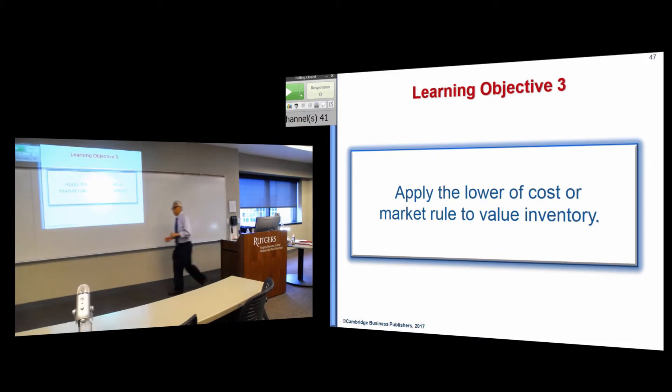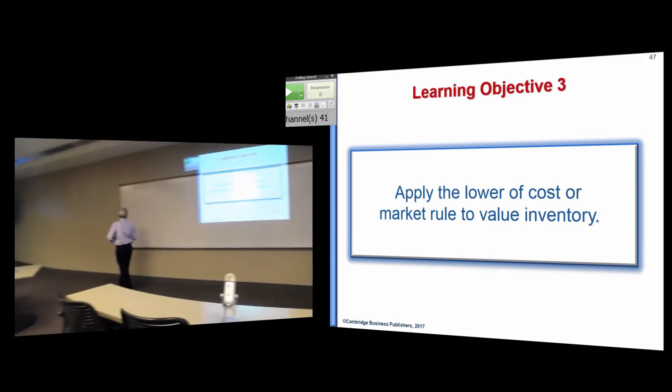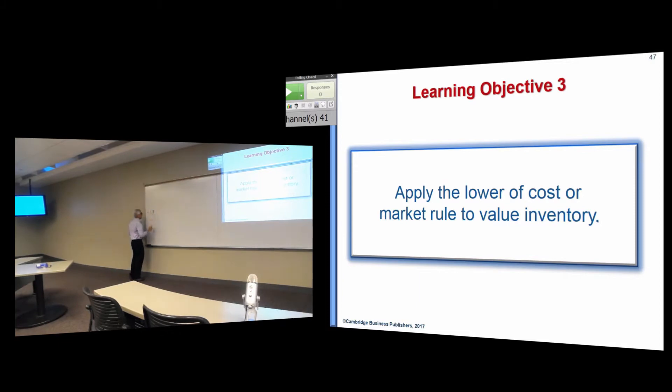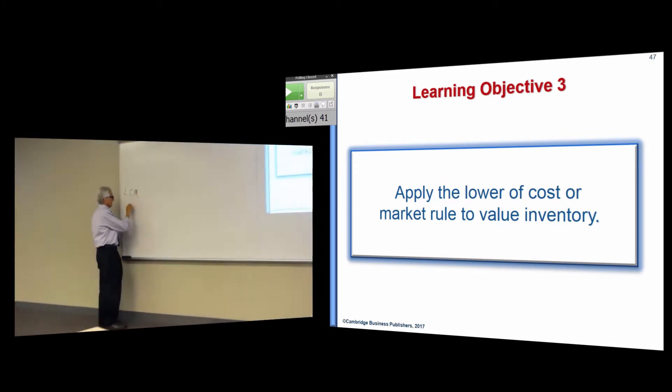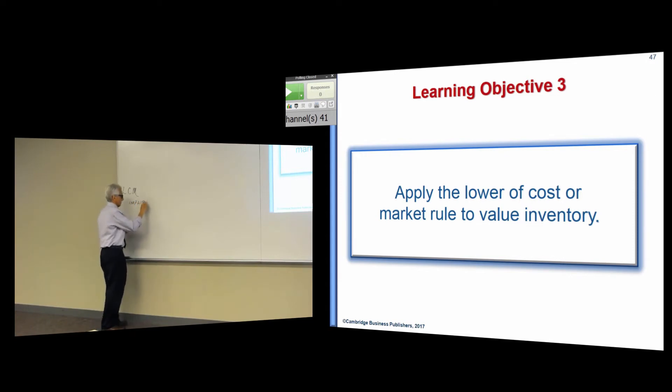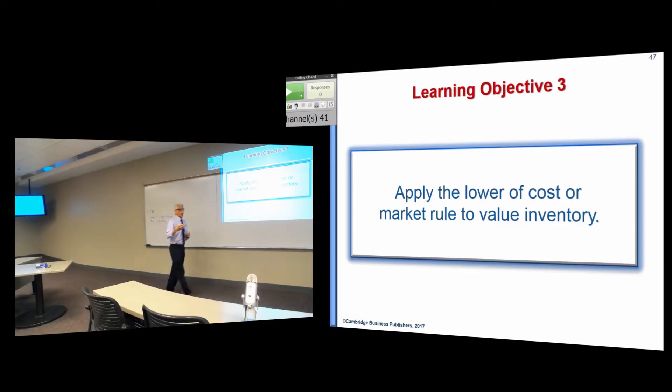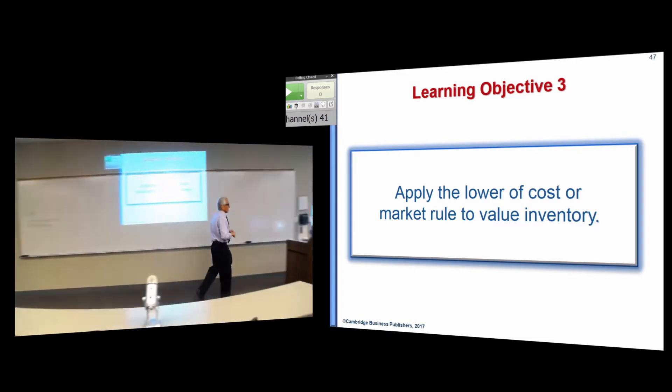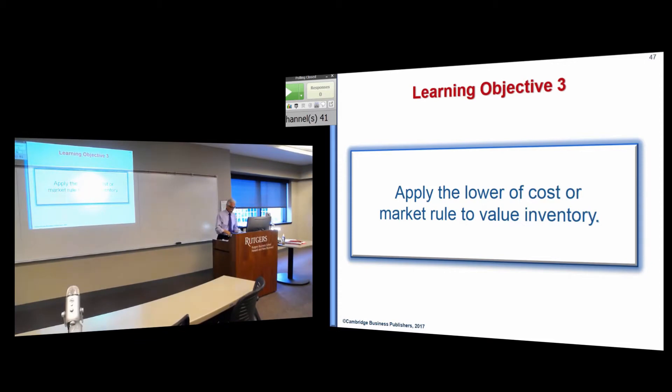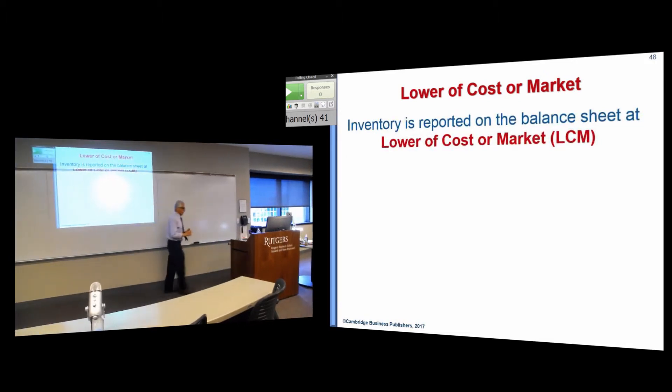Now, the lower cost of market rule, or LCM. If you think about LCM, the lower cost of market, this is really an impairment test. So it's done at the end of the period, after inventory is valued, LIFO, FIFO, what average cost, that cost is compared to market. If market is less than cost, a write-down may have to be taken. So as we know, if you... Let me bring up that graphic for you.